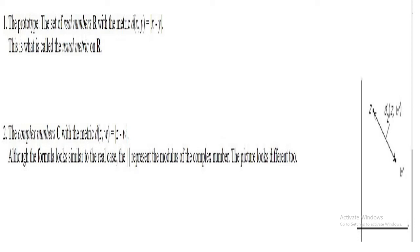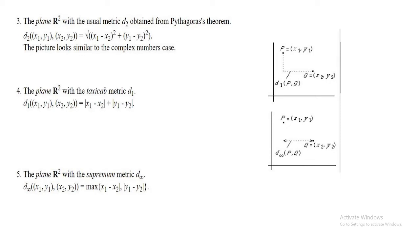In the set of all real numbers, we can take the distance between any two points as D(x,y) equal to the absolute value of x minus y, that is the modulus of x minus y. This is called the usual metric or absolute value metric on R. Similarly, we can define a metric on the complex numbers C: D(z, w) equal to the modulus of z minus w. In the plane R², the usual Euclidean metric D2 is defined as D2((x1,y1),(x2,y2)) equal to the square root of (x1-x2)² plus (y1-y2)², which is the distance between two points in two-dimensional space.